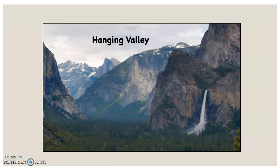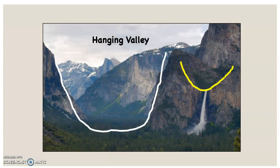A hanging valley — over on the right-hand side, this is Bridal Veil Falls, which is also in Yosemite Valley. It comes off a hanging valley and drops into the main U-shaped trough, which is Yosemite Valley. You can see the hanging valley, highlighted in yellow, dropping into that much larger U-shape. That's where Bridal Veil Falls is.